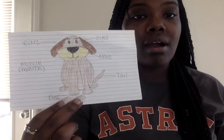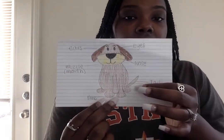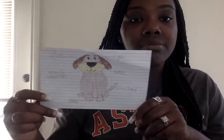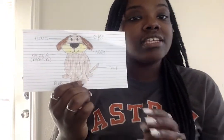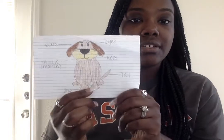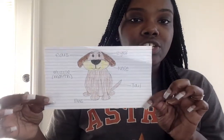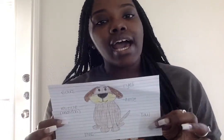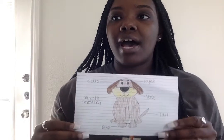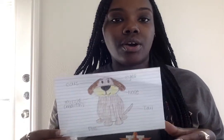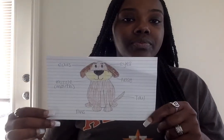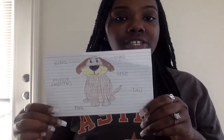So all these parts on this dog are needed. The dog needs all of these parts — it helps them to survive, just like the different parts of the plant. So you're going to do this too. You don't have to pick a dog; you can pick any type of animal — a cat, a mouse, a goat, a horse, a cow — and you're going to do the same thing. I would love to see what you guys drew.